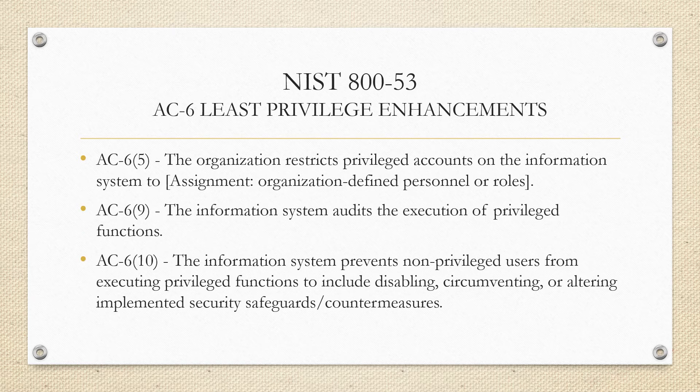AC-6 Enhancement 5: the organization restricts privileged accounts on the information system. Essentially, your organization shouldn't be handing out privileged accounts to every user — there has to be a justification and a reason tied to their specific job function.